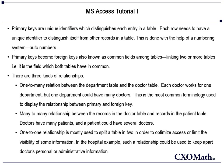Access therefore uses primary keys and foreign keys to connect tables and entries. Primary keys are unique identifiers which distinguish each entry in a table. Each row needs to have a unique identifier to distinguish itself from other records, done with the help of a numbering system or auto numbers. These primary keys become foreign keys, also known as common fields among tables, linking two or more tables — meaning it is a field which both tables have in common.